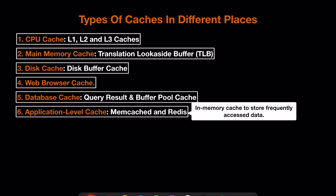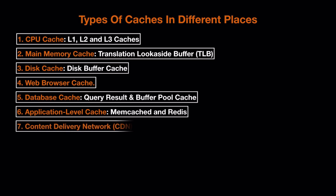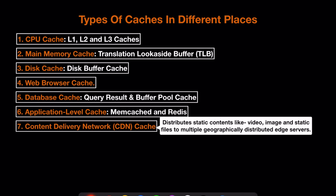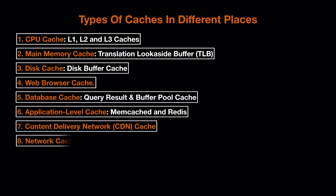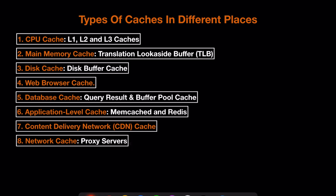We have many managed caching solutions for application-level caching — Memcached and Redis are two popular ones. Number seven is CDN cache, which distributes static content like videos, images, and static files to multiple geographically distributed edge servers. Finally, we have network cache — we can also place caching within our networking setup, like proxy servers, which can cache content and reduce load on the origin server.